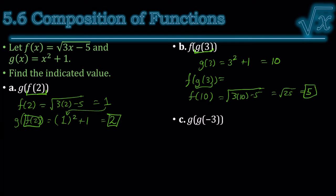Let's try another one. The inside is g of negative 3. So, plugging in a negative 3 to function g. Negative 3 squared is 9, plus 1 is 10.